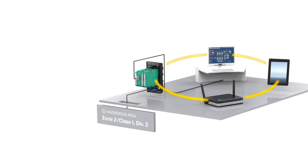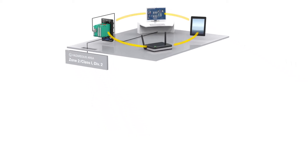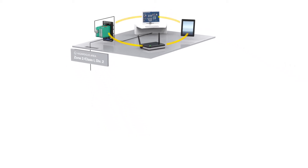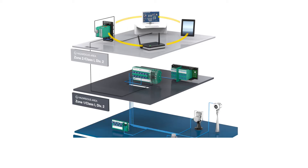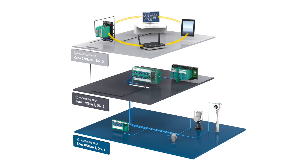A switch connects standard Ethernet with APL and powers the connected field devices via a two-wire cable of up to 1000 meters. Intrinsically safe field devices are connected to the field switch via two-wire cables of up to 200 meters.